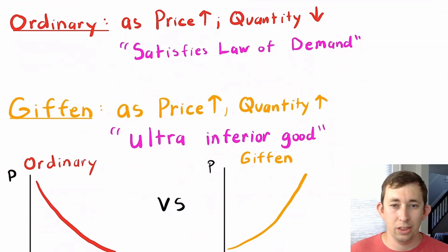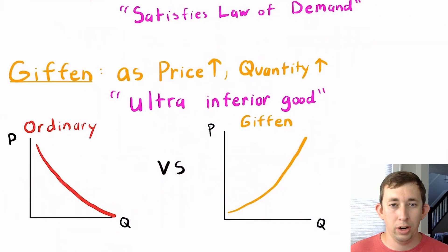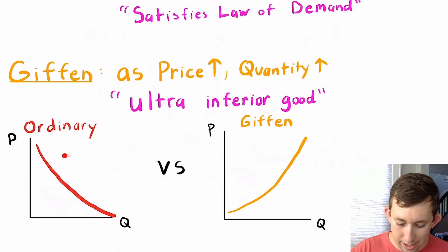So if I draw price offer curves for an ordinary good, it's going to be downward sloping because as the price goes up, quantity goes down.